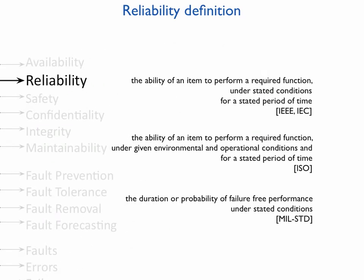The dependability tree shows that a dependable system has a number of attributes, and reliability is among them. The other attributes are availability, safety and so on. If we take a look into industrial standards like IEEE, IEC, and ISO standards, we can find a number of different definitions; however, they are pretty similar. The main idea is that reliability is the ability of the system to perform a required function under stated conditions for a stated period of time. Usually reliability is reported in terms of probability — in other words, it can be defined as the probability that there will be no system failure during the stated period of time under the stated conditions.